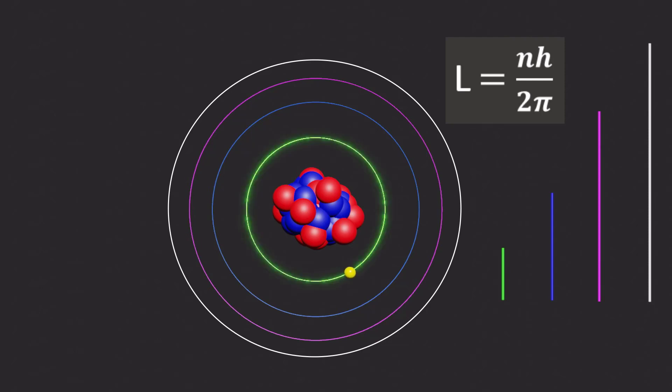According to this relation, in the first orbit, the angular momentum of an electron is h/2π. In the second and third orbits, it is 2 times and 3 times h/2π, respectively, and so on.